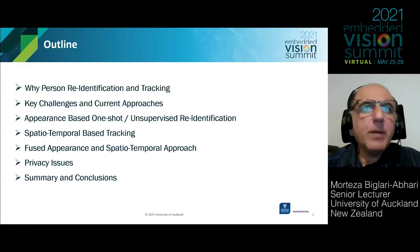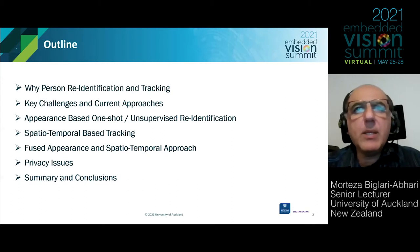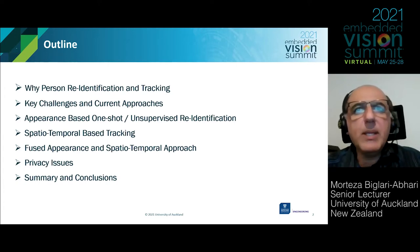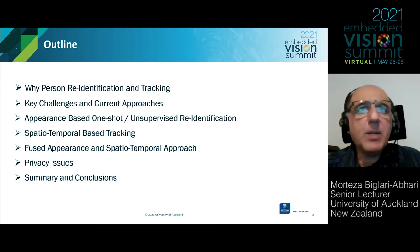In this talk, first I explain why we are interested in person re-identification and tracking, considering some target applications. Then I briefly explain some key challenges and current approaches for re-identification and tracking. We may use an appearance-based approach or a spatio-temporal-based tracking.